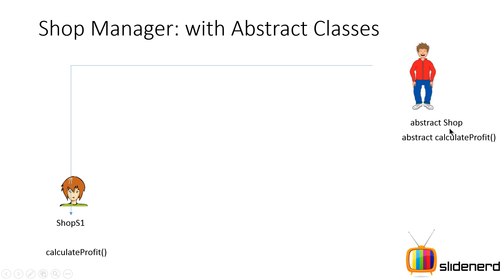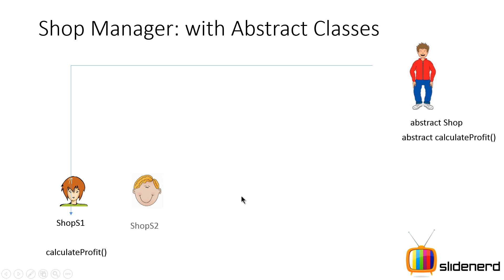Let's focus on how each shop is going to work with this. The first shop is going to extend the abstract class Shop and override calculateProfit — because remember, when you extend an abstract class you are supposed to provide a definition for the method declared as abstract. Shop 2 also does the same thing, extending the abstract class Shop.